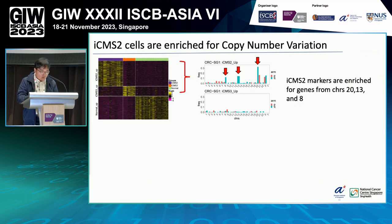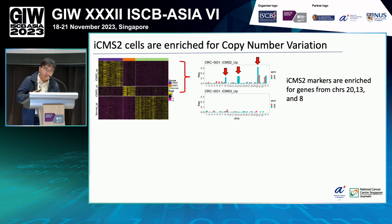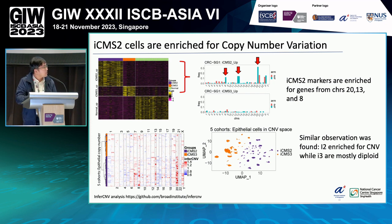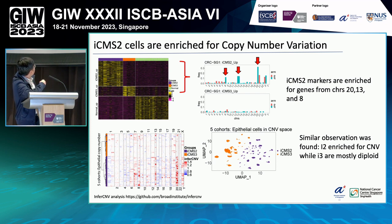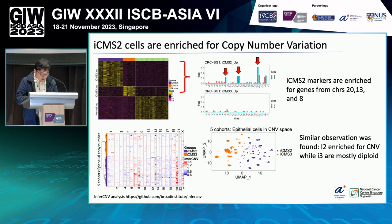Looking at our ICMS gene set, we noticed that ICMS2 markers are enriched for genes from chromosomes 20, 13, and 8. This was quite interesting, so we performed a copy number analysis using the InferCNV package. As shown in the heatmap, most ICMS2 patients have extensive CNV on chromosomes 20, 13, and 8, while for the ICMS3 group, they are mostly diploid or have very few CNV events.